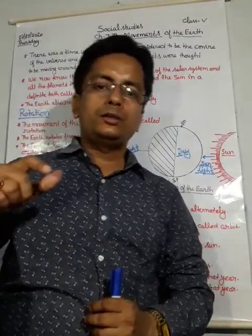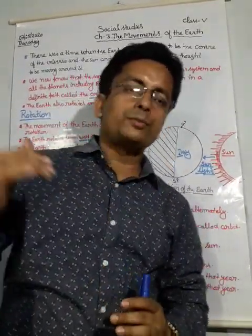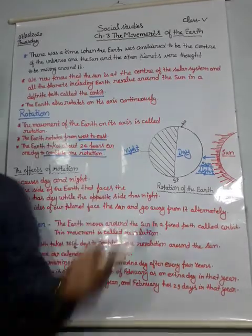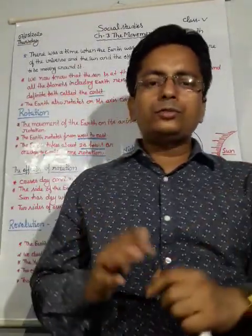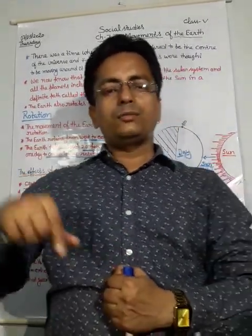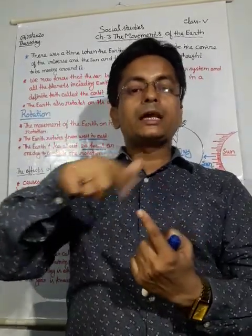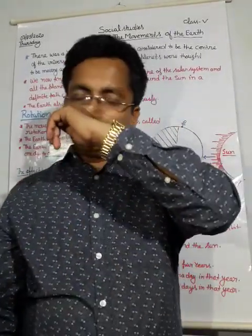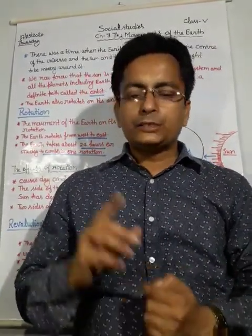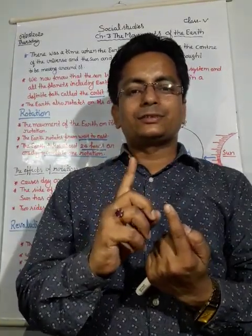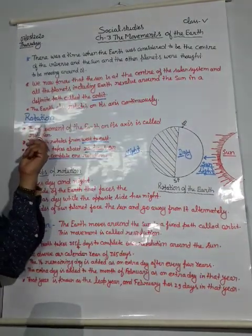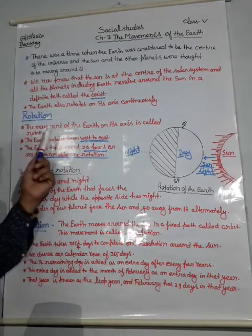The earth also rotates on its axis continuously. Earth revolves around the Sun, but it also rotates on its own axis. Just for example, if you take a globe and spin it in a direction, it spins on an axis — that is called the rotation of the earth.